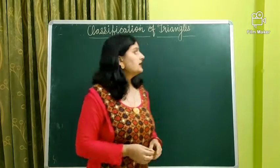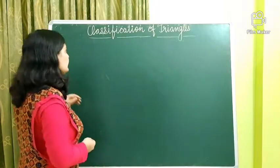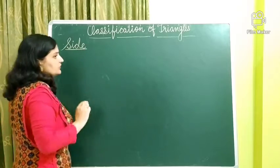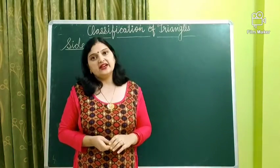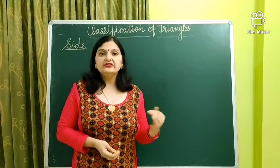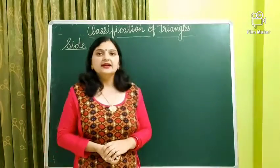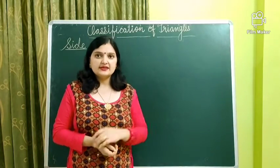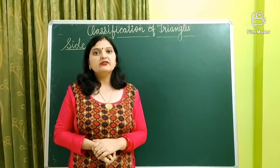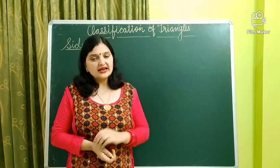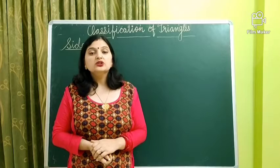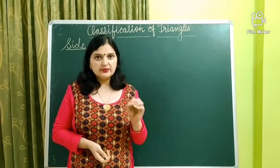First we will discuss classification based upon sides. We can classify the triangle in three different types. What can be the three different types on the basis of the side? A triangle has three sides. Either all three sides will be equal, or two sides will be the same, or all three sides will be different. So on this basis, we classify triangles.